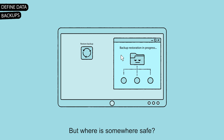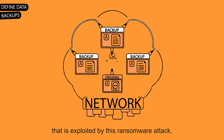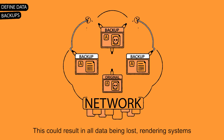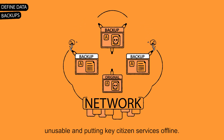But where is somewhere safe? If the data backups are on the same network that is exploited by the ransomware attack, then they could get corrupted as well. This could result in all data being lost, rendering systems unusable and putting key citizen services offline.